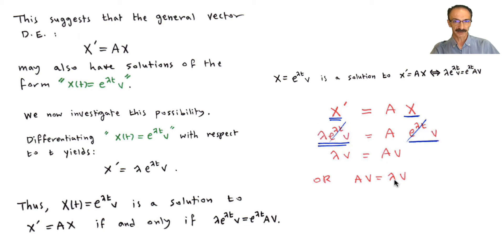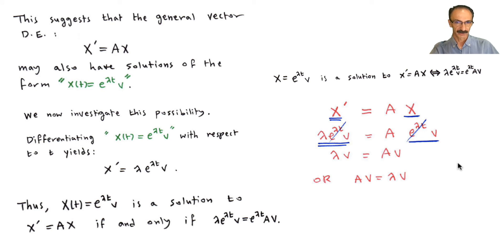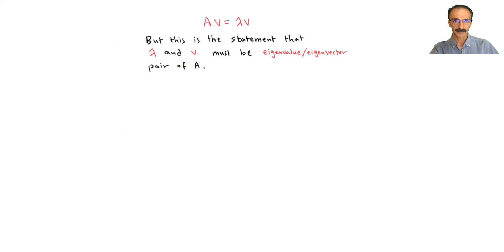So Av = λv — that's what we were working toward. This is the statement that lambda and v must be an eigenvalue-eigenvector pair of A. That's mainly what we're looking for.